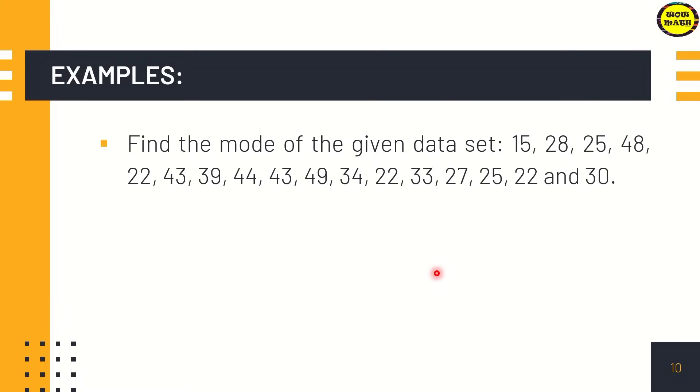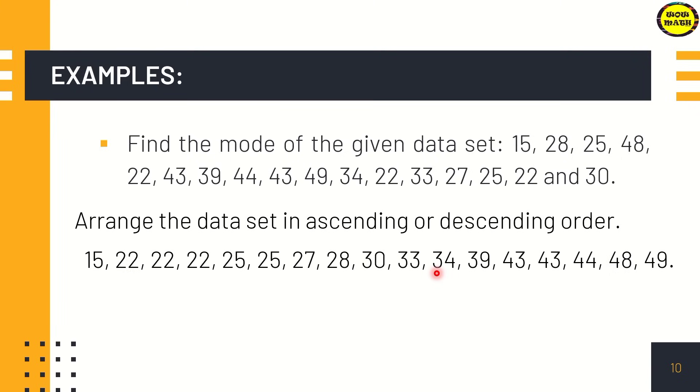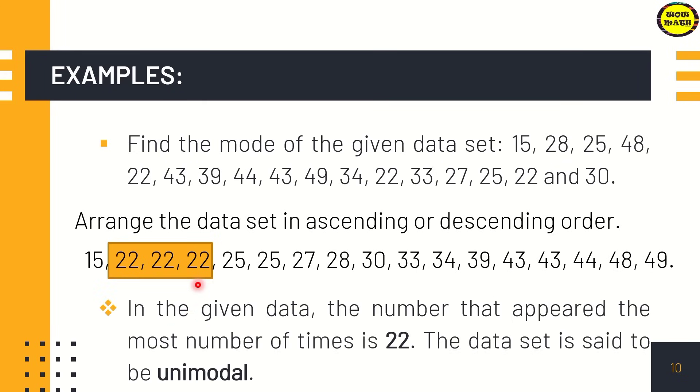To more quickly identify which number appears more than once or appears most in the given data set, arrange it in order, either in ascending or descending order. I did it in ascending order so we can easily see which number appears most. In this case, what do you think is the mode? Yes, that is 22. Why 22? Because that is the number that appeared the most number of times. So 22 is the mode. Also, the data set is said to be unimodal because we have one mode.